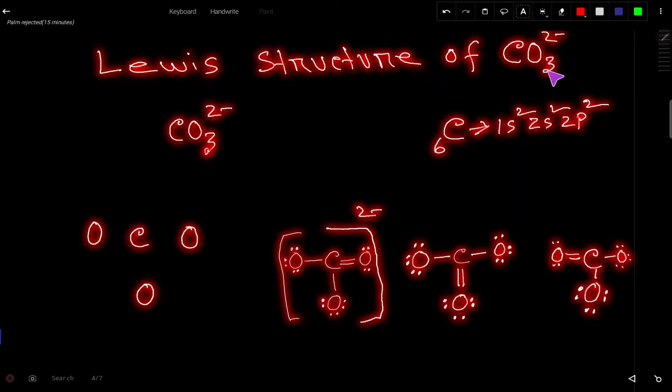Lewis structure of CO₃²⁻, that is how to draw the Lewis dot structure for carbonate ion.